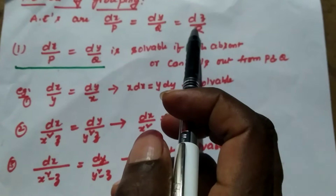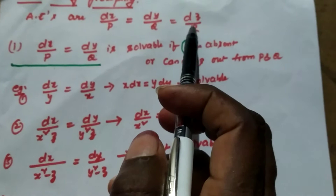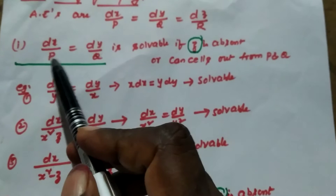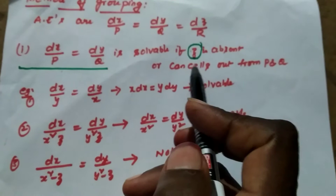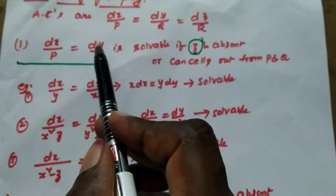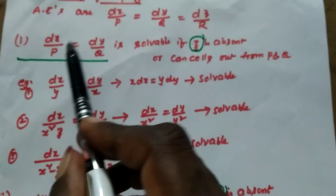In this method we can choose any two fractions from the set of three fractions. If we consider the first and second fractions, that means dx by p equal to dy by q, then this is solvable if z is absent or cancels out from p and q. That means p and q may contain x and y but do not contain z.